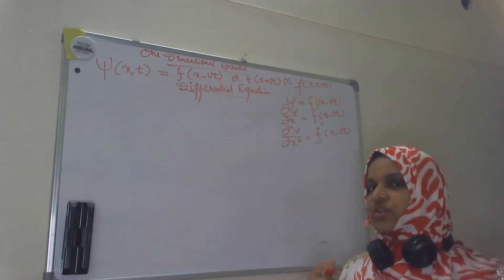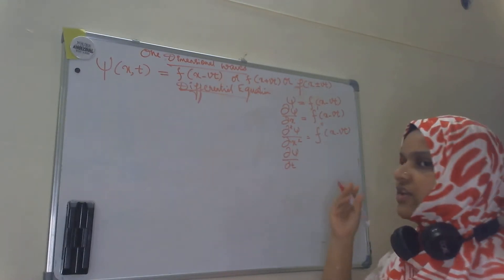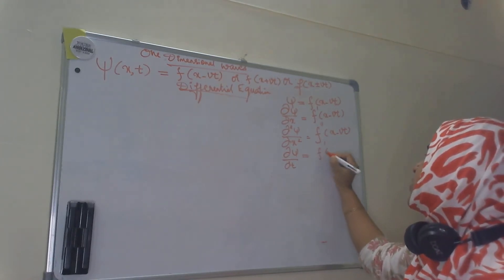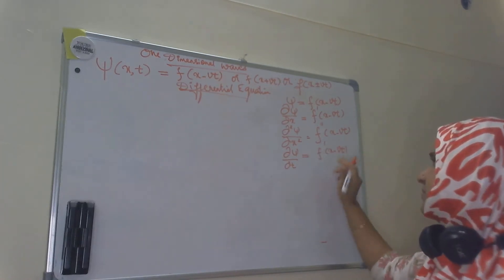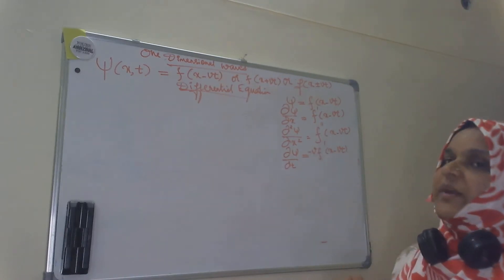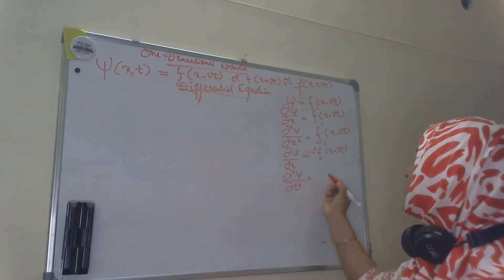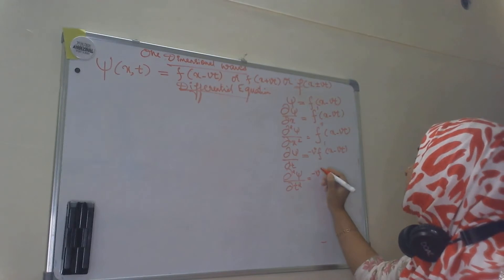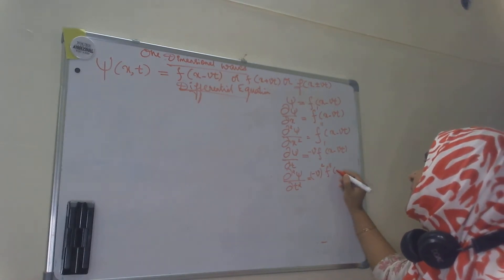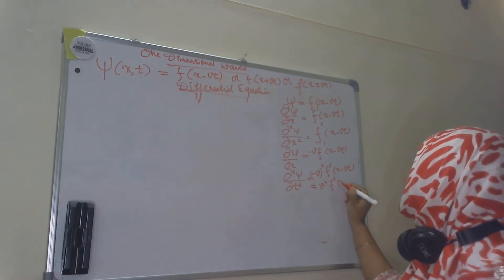Now, taking the partial derivative of psi with respect to t — here x is a constant and t is the variable. We get ∂psi/∂t = f'(x − vt) multiplied by (−v), since we have minus v multiplied into t. Taking the second partial derivative, ∂²psi/∂t² equals (−v) multiplied twice, giving minus v squared times f''(x − vt). So ∂²psi/∂t² = v² f''(x − vt).